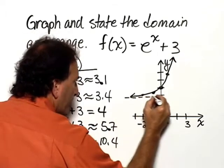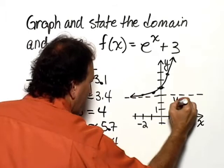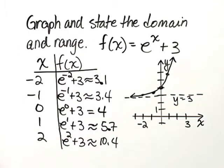And you'll notice that the line y equals 3 acts as a horizontal asymptote.